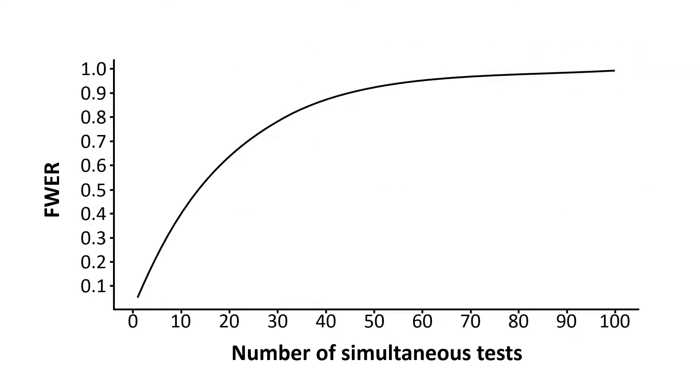In fact, the Bonferroni method is so strong that it keeps the family-wise error rate at around 5%, regardless of the number of simultaneous tests performed. And I'll go into a bit more detail later as to why this can be an issue.